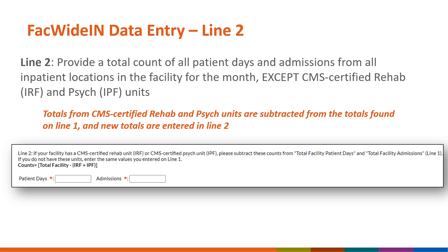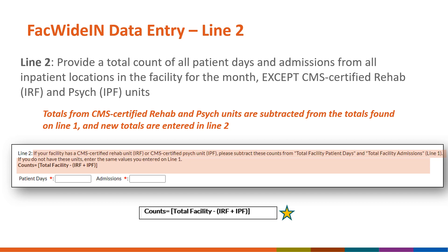Line 2 on the denominator form is a subset of line 1 and represents the total number of patient days and admissions from all active inpatient units with the exception of CMS certified inpatient rehabilitation units and CMS certified inpatient psychiatric units, also known as IRF and IPF units. Totals from these two units are to be subtracted from the totals found on line 1 and the new totals entered on line 2. The formula to help calculate the number of patient days and admissions for line 2 is available on the denominator form and can be seen on this slide next to the gold star.